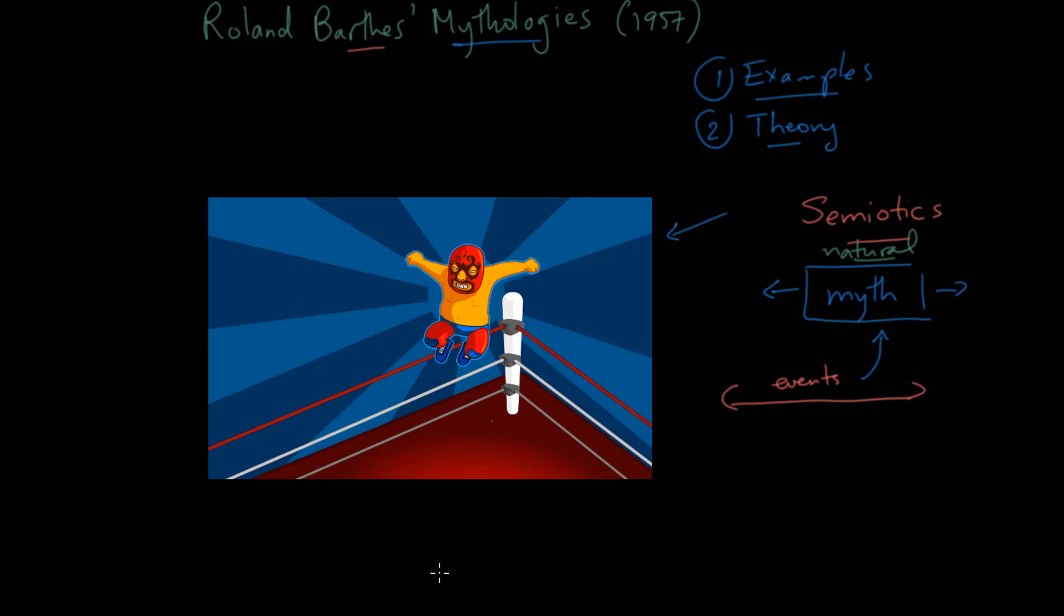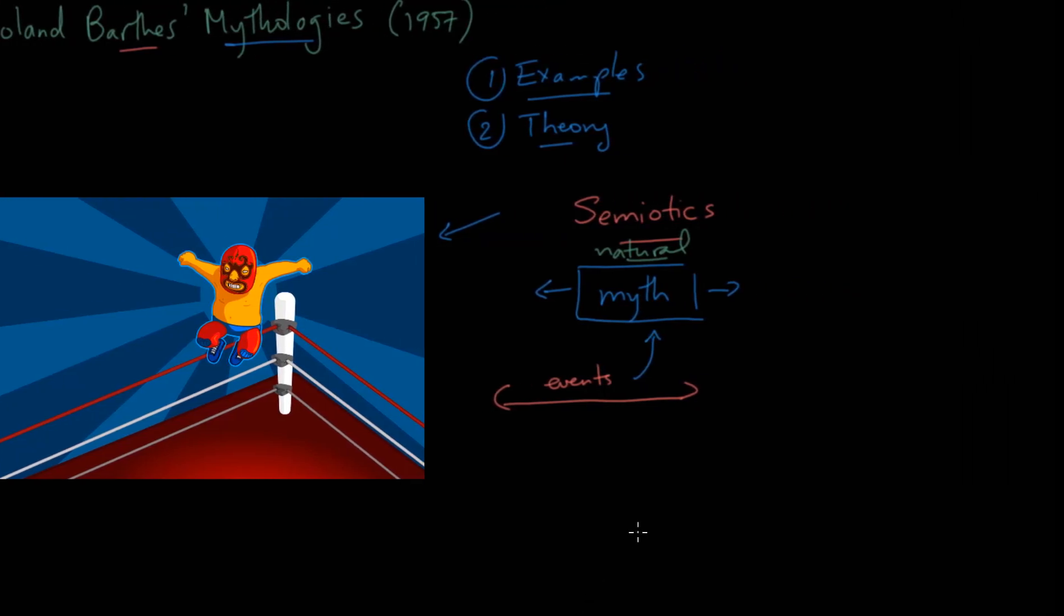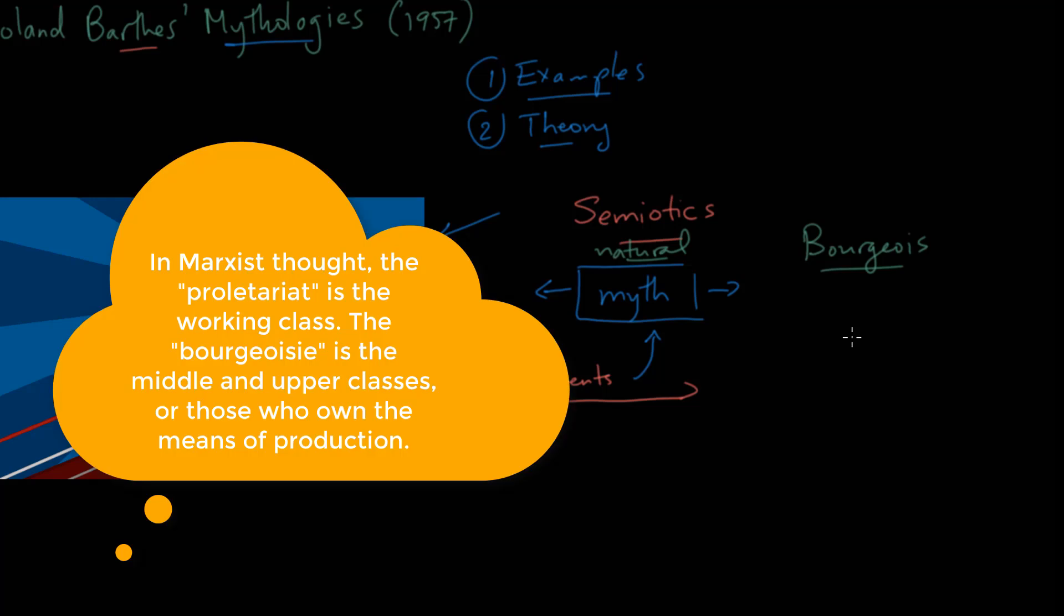Now for Roland Barthes, it's especially a certain social class that creates these myths, and that's the bourgeoisie, so the bourgeois myth is what rules supreme, and by bourgeois he means kind of traditional conventional society in this period, everything that a leftist like Barthes doesn't like, as you can imagine.